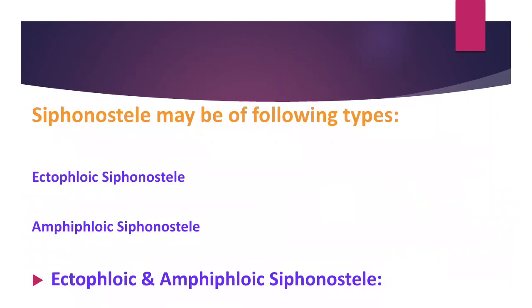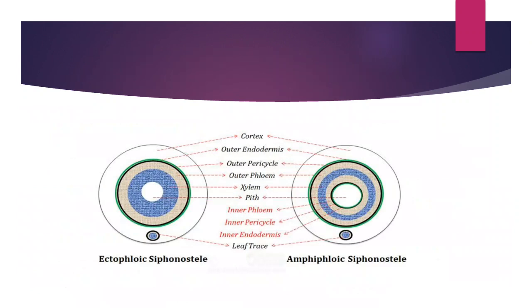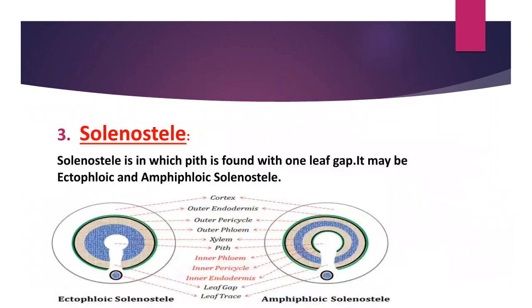There are some more subdivisions of siphonostele: ectophloic stele and amphiphloic stele. You can see here both types of stele with diagrams, and their components include outer cortex, outer endodermis, outer pericycle, outer phloem, xylem, pith, inner phloem, inner pericycle, inner endodermis, and leaf trace. Solenoid stele: in this type, pith is found with one leaf gap. It may be ectophloic or amphiphloic. You can see here again the diagram of both stele types.